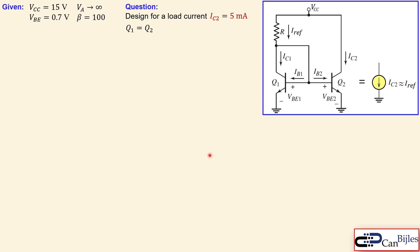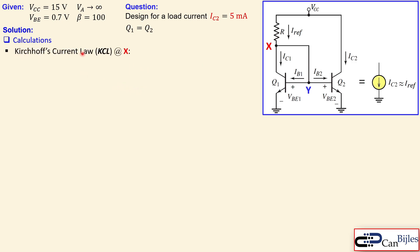Let's see how we can design for a load current of five milliamps for this circuit. We start with calculations — as always in our analog electronics videos, we begin by designating the nodes. We have two nodes here: X and Y. The reference current IRF splits into IC1, and the current in that branch splits again at node Y into IB1 and IB2, the base currents of Q1 and Q2. We can write at node X the Kirchhoff current law: IRF equals IC1 plus IB1 plus IB2.